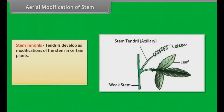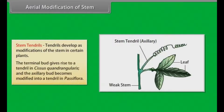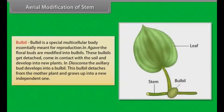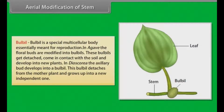Tendrils develop as modifications of the stem in certain plants. The terminal bud gives rise to a tendril in Cissus quadrangularis, and the axillary bud becomes modified into a tendril in Passiflora. Bulbil is a special multicellular body essentially meant for reproduction. In Agave, the floral buds are modified into bulbils. These bulbils get detached, come in contact with the soil, and develop into new plants. In Dioscorea, the axillary bud develops into a bulbil, which detaches from the mother plant and grows up into a new independent one.